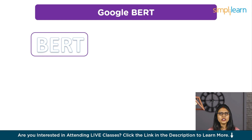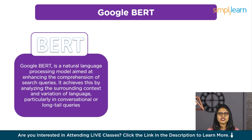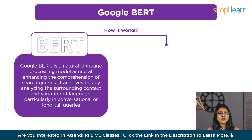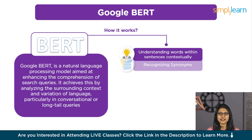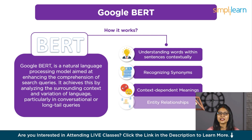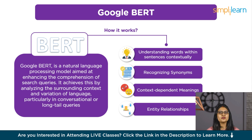Google BERT, introduced in October 2019, is a natural language processing model aimed at enhancing the comprehension of search queries. It achieves this by analyzing the surrounding context and variations of language, particularly in conversational or long queries. BERT's methodology involves understanding words within sentences contextually, utilizing bidirectional training to capture relationships between words effectively. Initially pre-trained on extensive text data to learn language intricacies, BERT can then be fine-tuned for specific tasks such as search query interpretation or text classification. With its emphasis on semantic understanding, BERT excels in recognizing synonyms, context-dependent meanings, and entity relationships within sentences. By integrating BERT into its search algorithm, Google seeks to provide more precise and relevant search results, particularly for complex queries, enhancing the overall user experience.